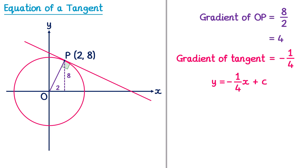To find C we need to use a point that's on the line, and conveniently we know one point on the line: the point P. The point P has X coordinate 2 and Y coordinate 8. This means we can substitute these values for X and Y into our equation of the line, and this will help us find the value of C. So let's replace the X with a 2 and the Y with an 8.